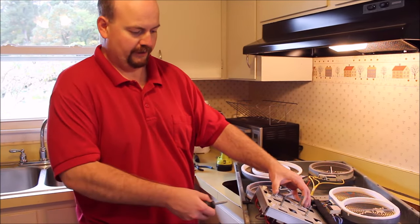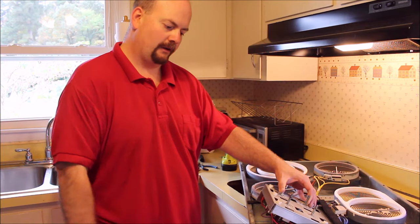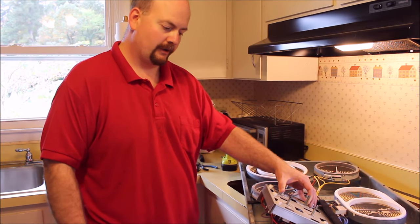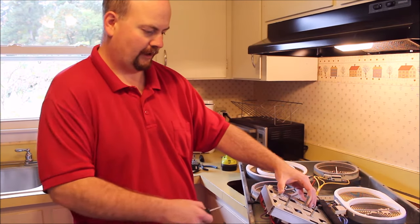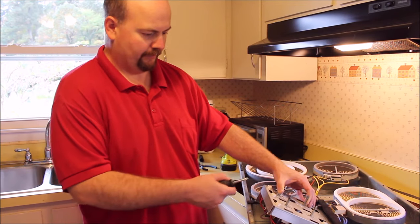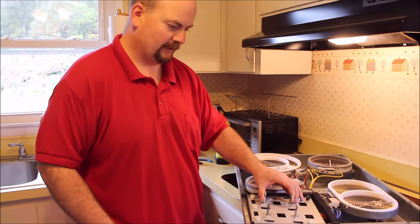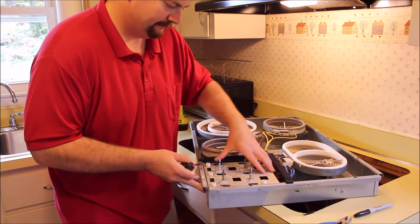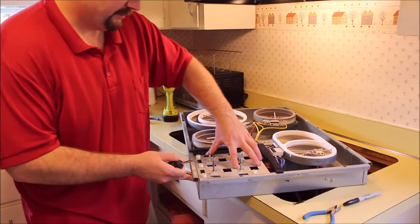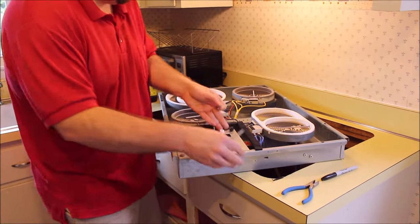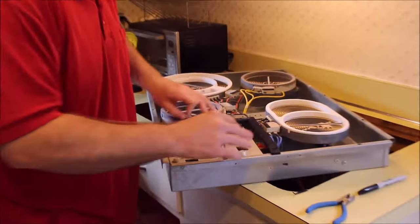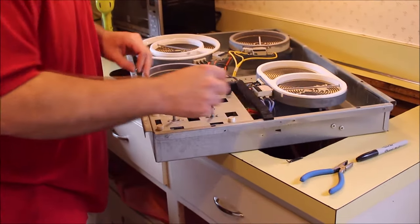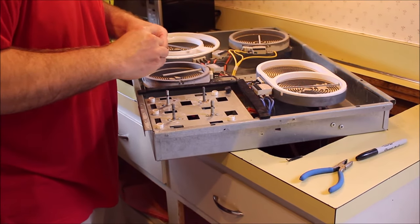All right, so we've completed the installation of the switch, connected all the connectors to the right terminals on there using our map provided with the switch and the instructions. Now I'm going to remount the switch bracket here, put the switch bracket back into place in the cooktop. There's three or four screws here. You have to reassemble this one, it fits in place pretty easily so it's ready to go. Go ahead and put in the first screw here.